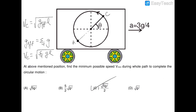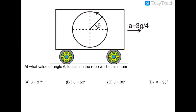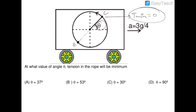Option C is the correct answer for that question. The next part of the comprehension asks for the angle theta at which tension in the rope is minimum. Tension is minimum at position C, which is directly opposite the equilibrium position A. The minimum tension there is zero. Since the equilibrium angle is 53 degrees, the correct answer is option B.